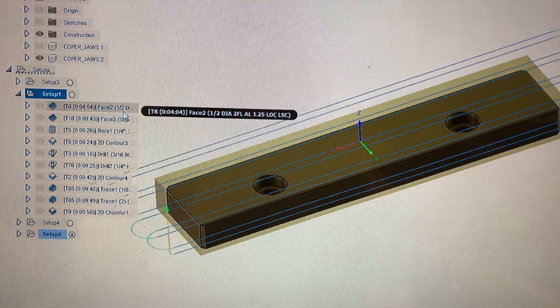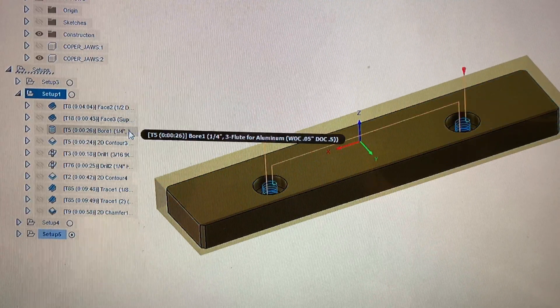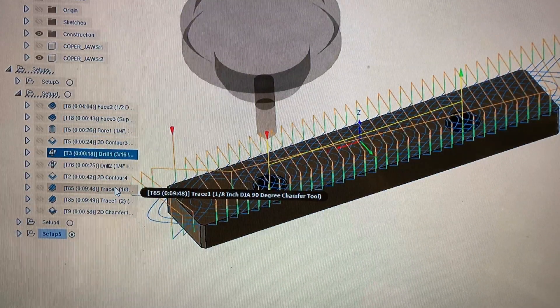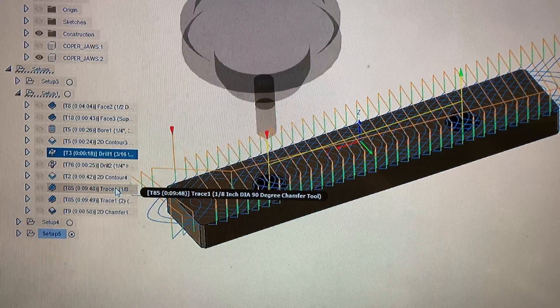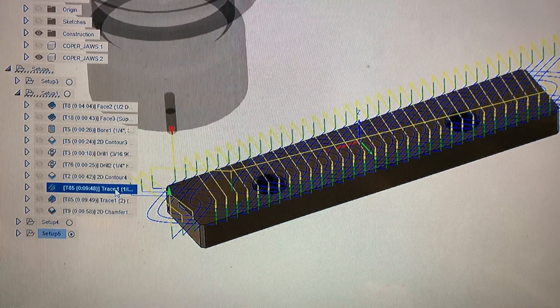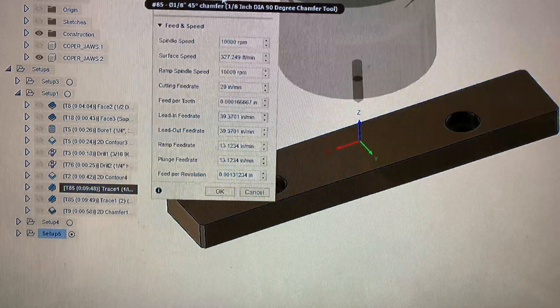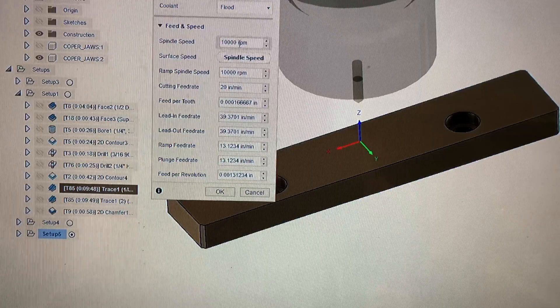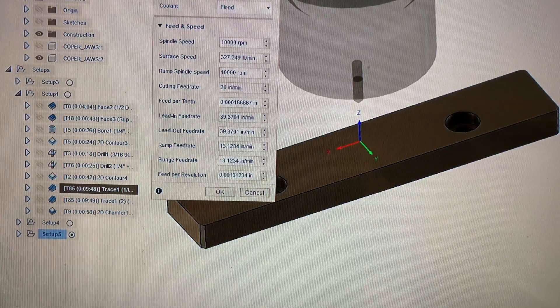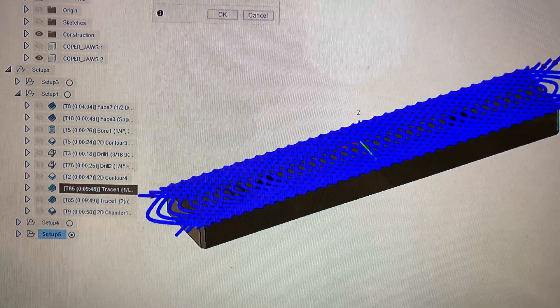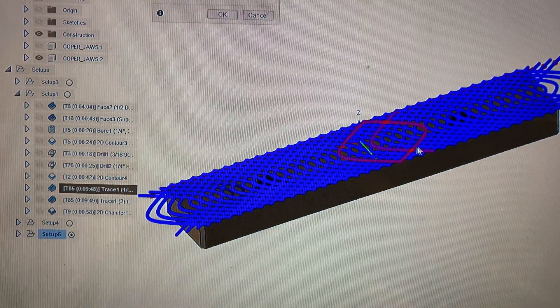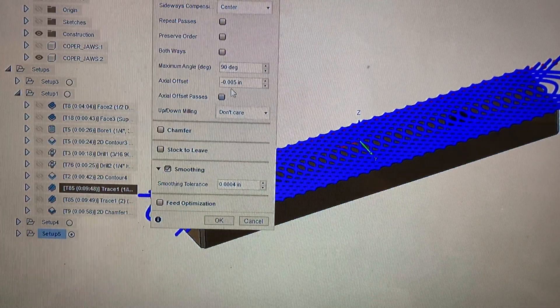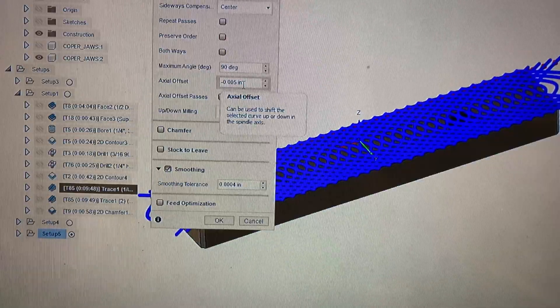So for the second op everything was pretty much the same as the first. There's a facing operation, then there's a boring counterbore. For the most part we're all just standard speeds and feeds following the same rules we've already discussed. To do the snakeskin I went in to use a trace pattern and I was using an eighth inch 45 degree chamfer tool at 10,000 RPM at 20 inches per minute with 5 thou depth of cut. And I had to go through and select every one of these lines, and of course smoothing with a minus 5 thou depth of cut.